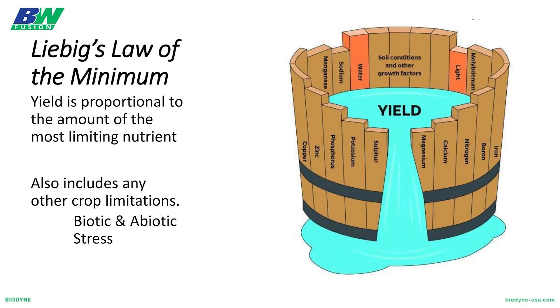Those at home are probably saying it's about dang time you got to the data. So kicking off here, we like to throw this out there. This is a neat chart — this is Liebig's Law of the Minimum. Basically, yield is proportional to the amount of the most limiting nutrient. If that nutrient is limiting, your yield is only as good as what you can gain up to the point where that nutrient limits it.